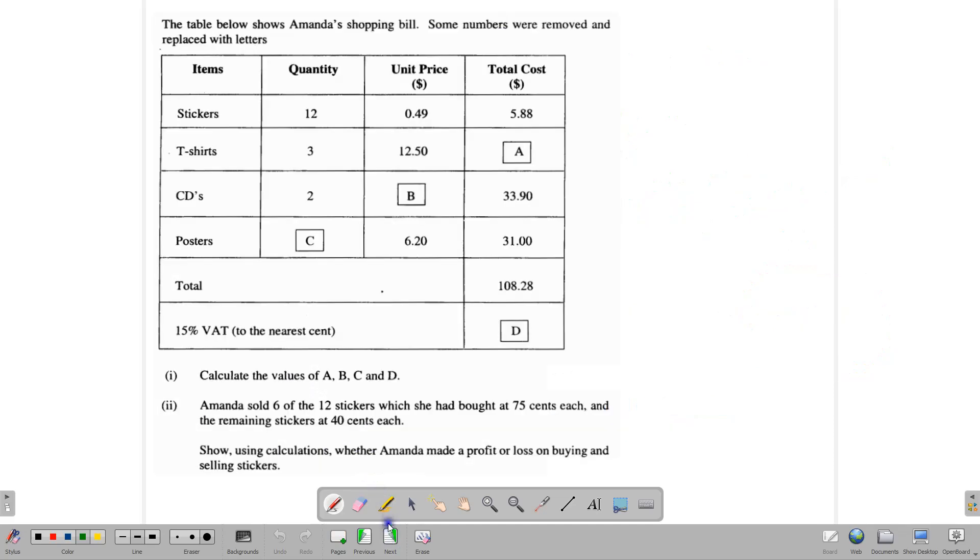Let's look at another one. And in this one, this is Amanda's shopping bill. And we're asked to find some values, A, B, C, and D, based on what she shopped for.